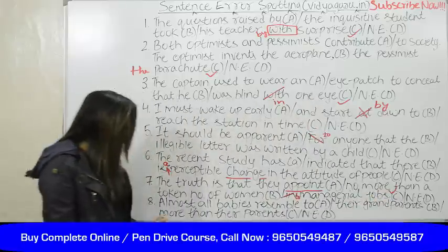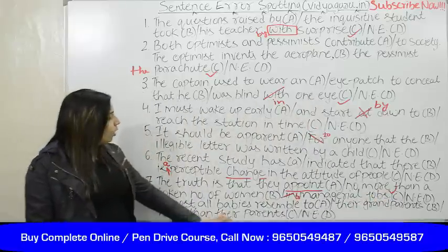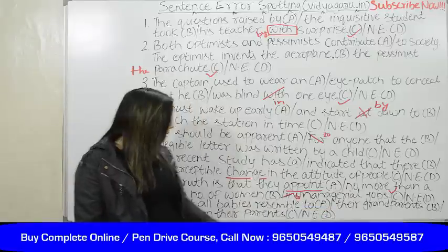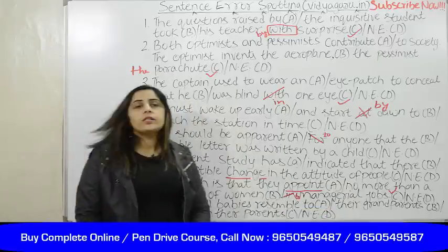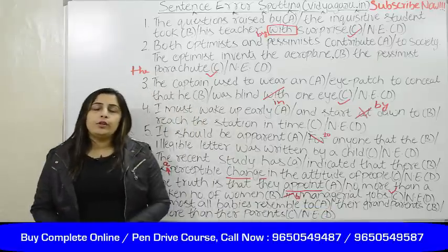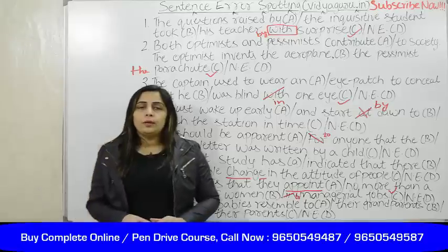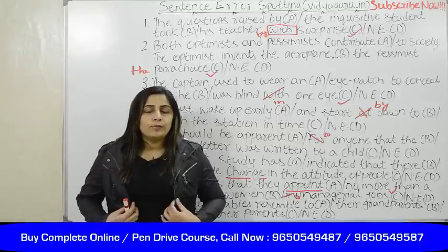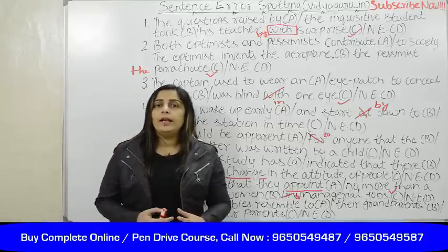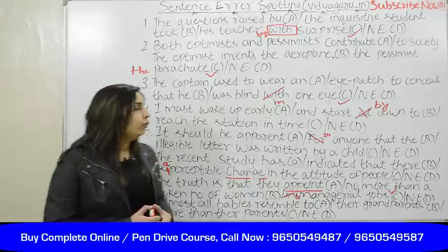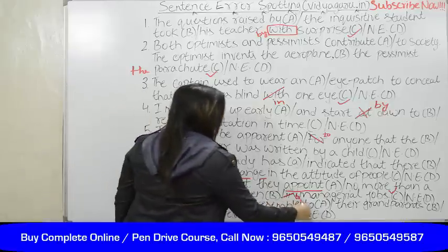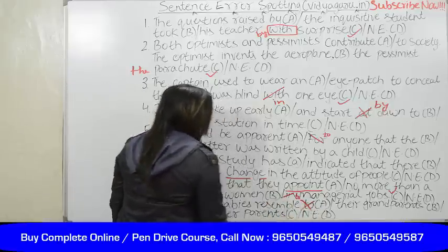The eighth question: 'Almost all babies resemble to their grandparents more than their parents.' With the word 'resemble,' we do not use any preposition. I resemble you; you resemble me — no preposition after resemble. The correct sentence is: 'Almost all babies resemble their grandparents more than their parents.'